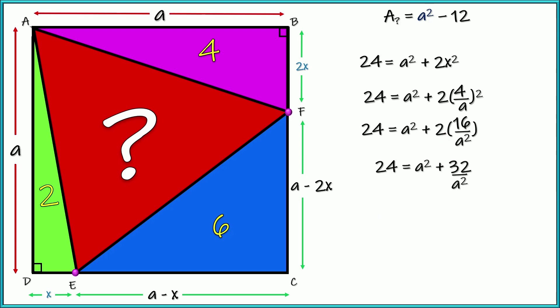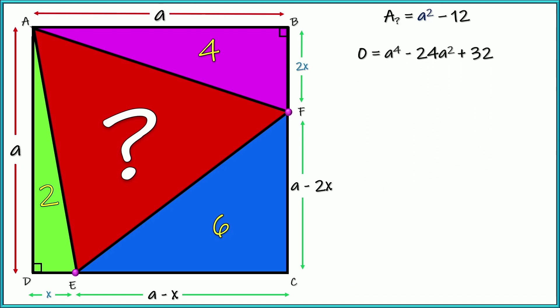All right. So now, cool. We have one equation. One variable. Let's go ahead and clean it up so we don't have a denominator. Let's multiply all three terms by A squared. And we get 24 A squared equals A to the fourth plus 32. And let's go ahead and subtract that 24 A squared to the other side. And here's what we've got. Now, that's not quadratic, but it's quadratic form. So we can use the quadratic formula to solve for A squared, which is what we're looking for anyway.